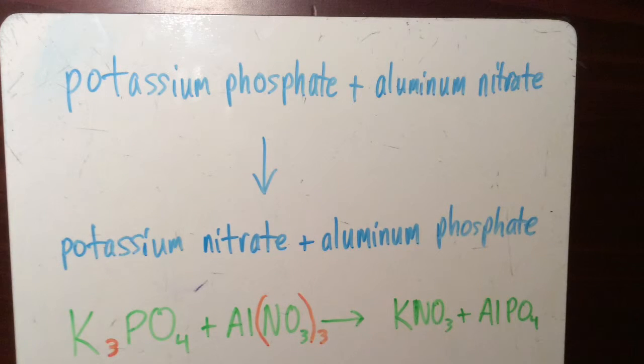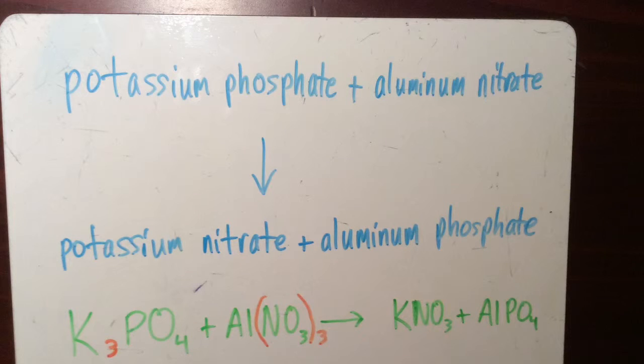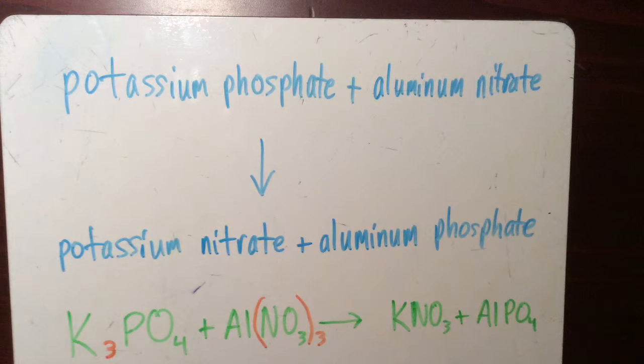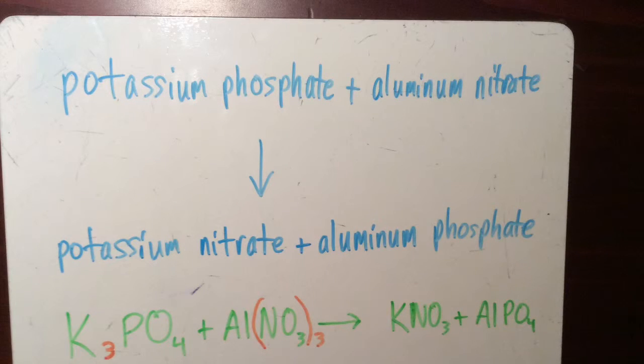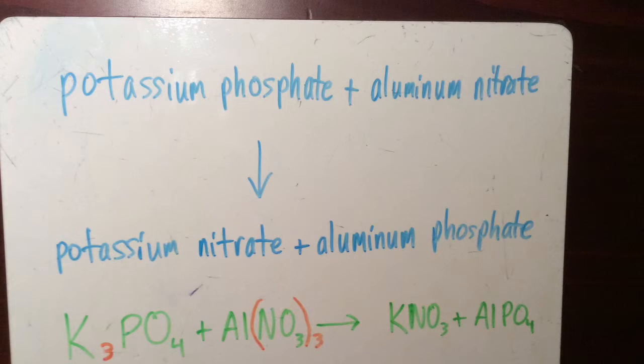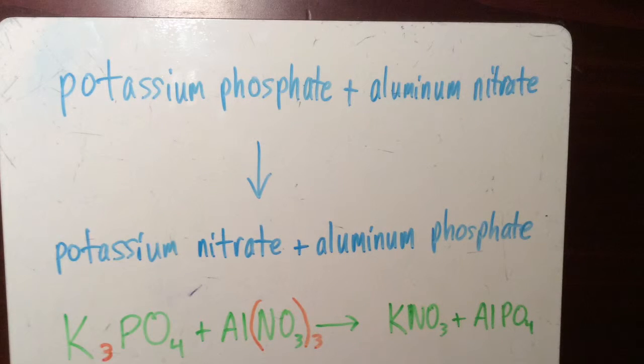In order for the entire equation to be balanced there needs to be the same amount of atoms of each element on both sides of the equation. To balance the equation we need to add coefficients in front of the molecules. At this point we cannot change subscripts anymore.